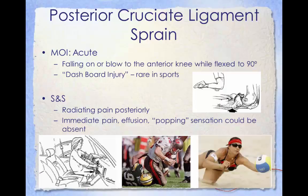An injury to the posterior cruciate ligament requires a powerful force. A common cause is a bent knee hitting a dashboard in a car accident, or a football player falling on a bent knee. PCL injuries are not as common as other knee ligament injuries — they are often subtle and more difficult to evaluate. A PCL injury frequently occurs alongside injuries to other structures such as cartilage, other ligaments, or bone. Typical symptoms include radiating pain posteriorly, pain with swelling that occurs steadily and quickly after the injury, swelling that makes the knee stiff and may cause a limp, and difficulty walking.